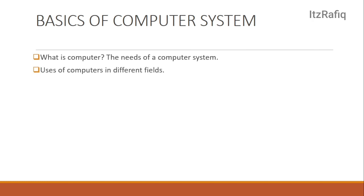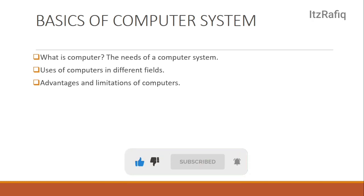After that, uses of computers in different fields — we are not using computers only in one field, but in many fields like medicine, health sector, education, government, and so on. If the mark allotted is only one, just write the field names; if it's 2 or 3 marks, elaborate the points. The next thing is advantages and limitations of computers. For advantages, write speed, accuracy, diligence, storage capacity, versatility, etc. For limitations, a computer can't do anything itself — it always needs humans to control it. You can write these yourself without memorizing from the book.